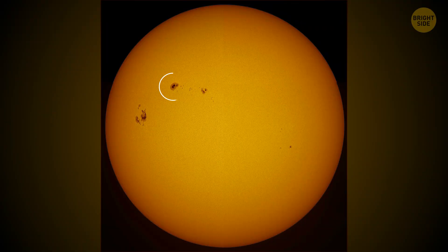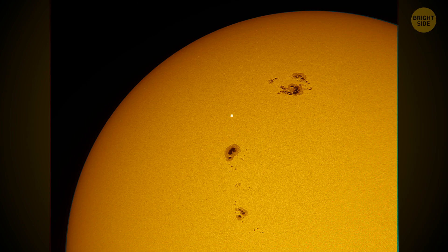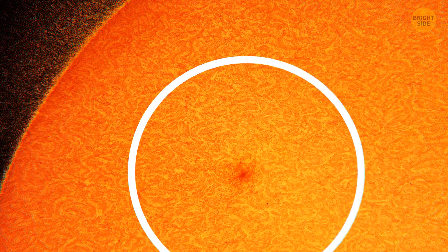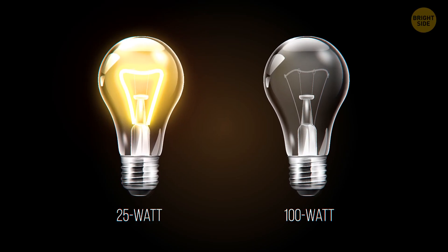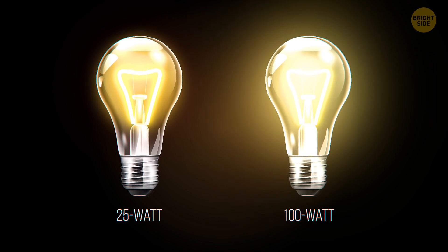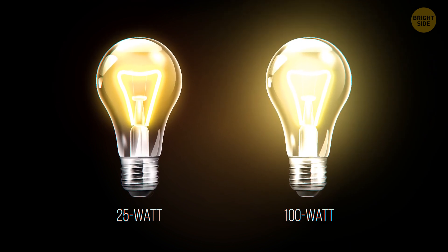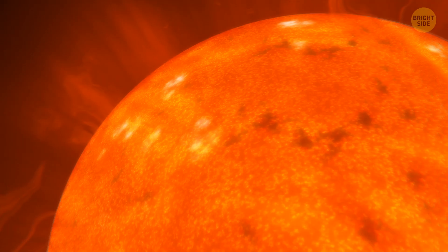Sunspots look like dark spots on the sun, but they aren't dark. They're just not as bright as the surface of the sun. To get a better idea, take a lit 25-watt light bulb and hold it in front of a lit 100-watt light bulb. The 25-watt light bulb will appear dark. That's the same way it is with sunspots.